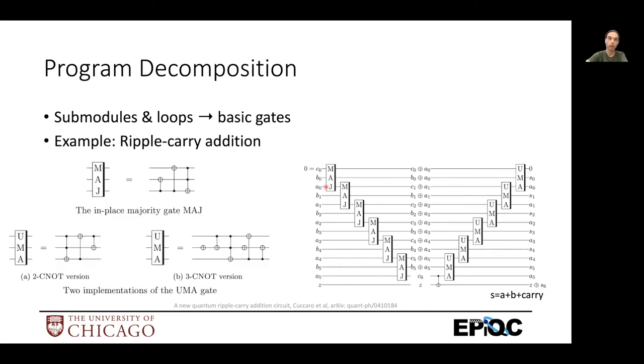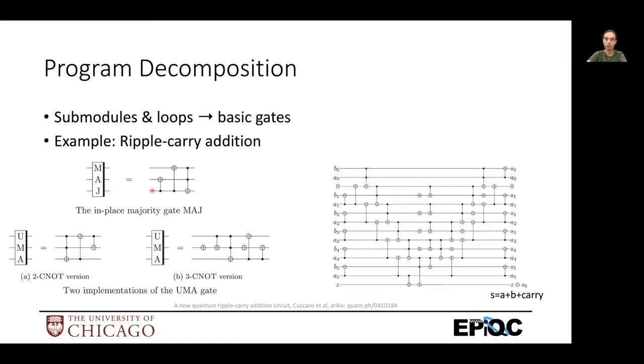So they helpfully describe what they do here. Majority can be implemented with this sequence of gates, CNOTs and Toffolis, and unmajority and add can be either this or this. And then decomposition is simply substitute each of these sub circuit calls with the actual circuit. And we can move the individual gates horizontally without adjusting what the circuit does. So we can compress it a little bit.